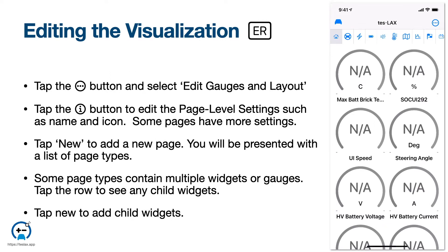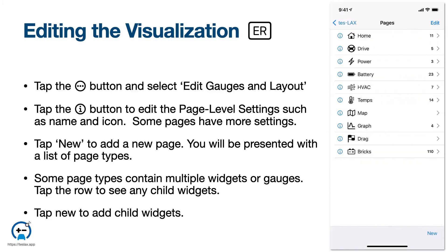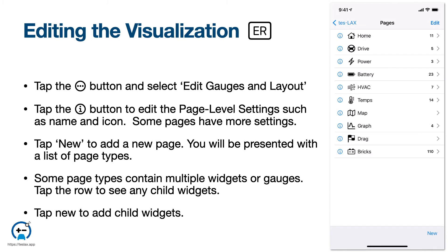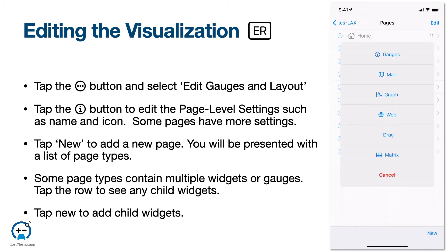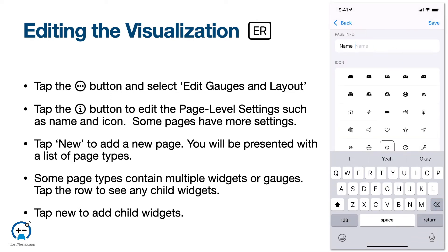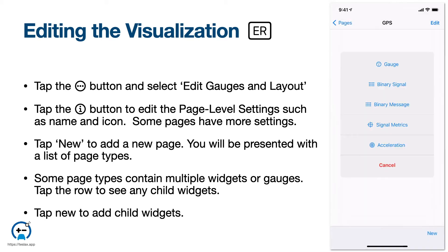Next, let's see how to edit the visualization. First, tap the Ellipsis button in the upper right-hand corner. Select Edit Gauges and Layout. From the Pages list, tap the I button next to the page you wish to edit. You will see settings such as name and icon, and some pages have additional settings. Tap the New button to add a new page. You'll be presented with a list of page types. You can provide the page a name and icon, and if there are any additional settings, you can configure them here. Some page types contain multiple widgets or gauges. Tap the row to see any child widgets. Tap New to add children, such as an additional gauge.